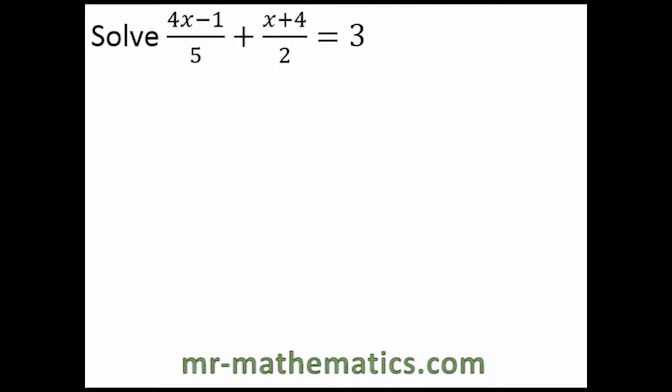We're going to solve this equation. The first thing we're going to do is multiply every term by 5. The reason for doing this is 5 divided by 5 will cancel to make 1. So now we have 4x minus 1 plus 5 lots of x plus 4 over 2 equals 15.